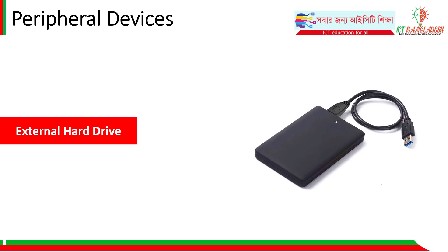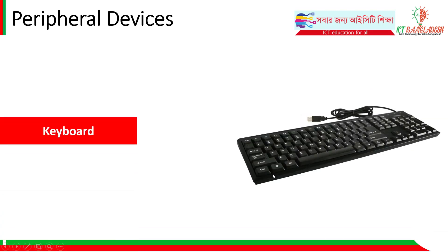An external hard drive can be easily connected and disconnected from the computer — you can attach or remove the cable freely. A keyboard is used for data input: users type data via the keyboard and that data goes into the computer. It is a fundamental external peripheral device.